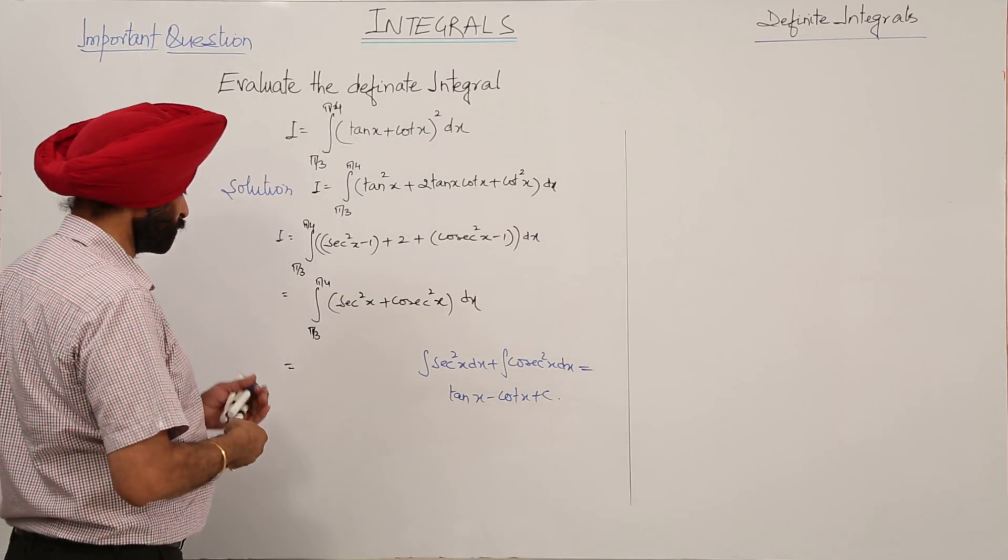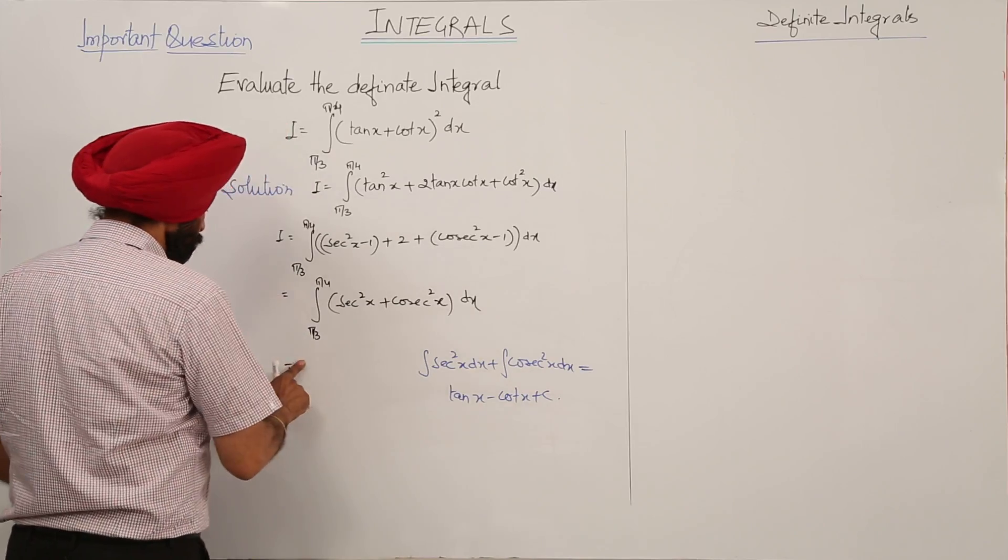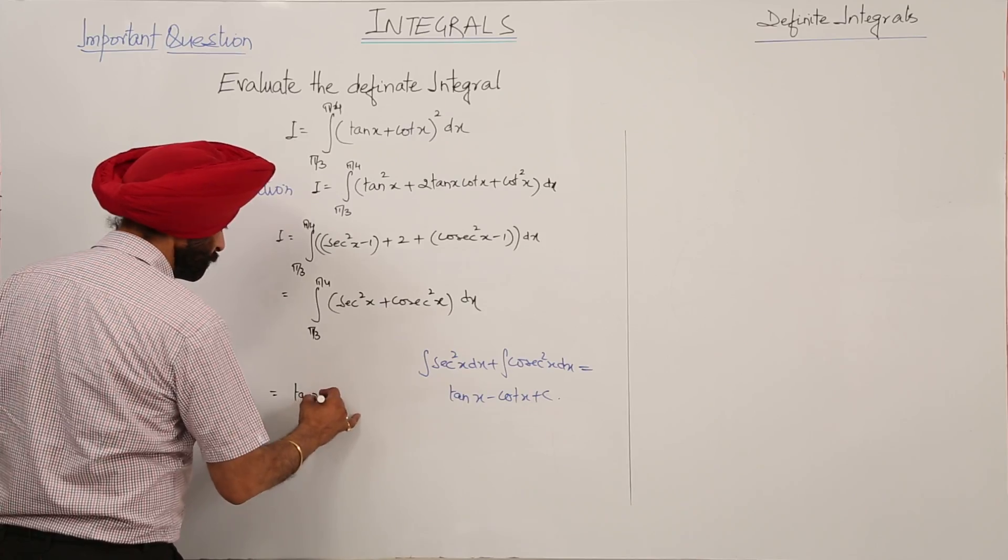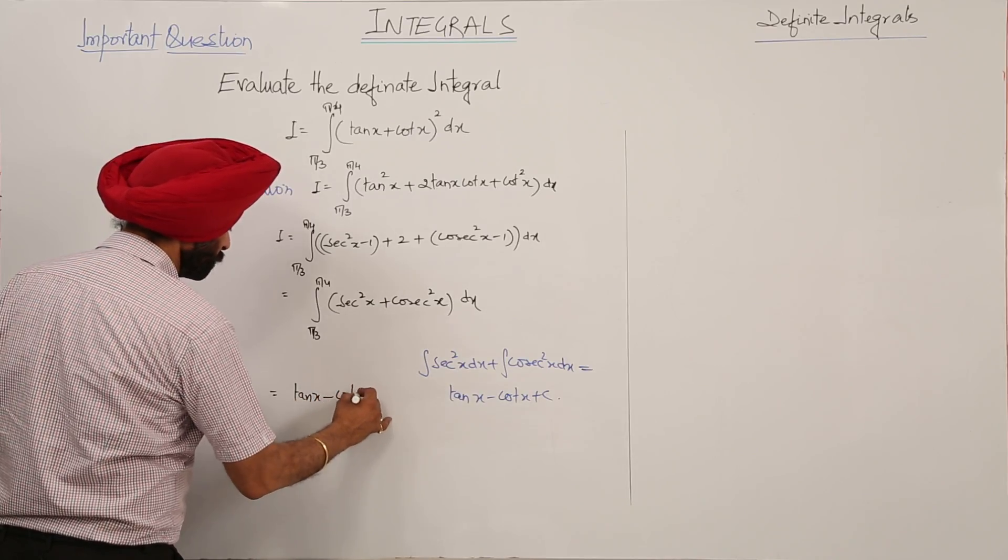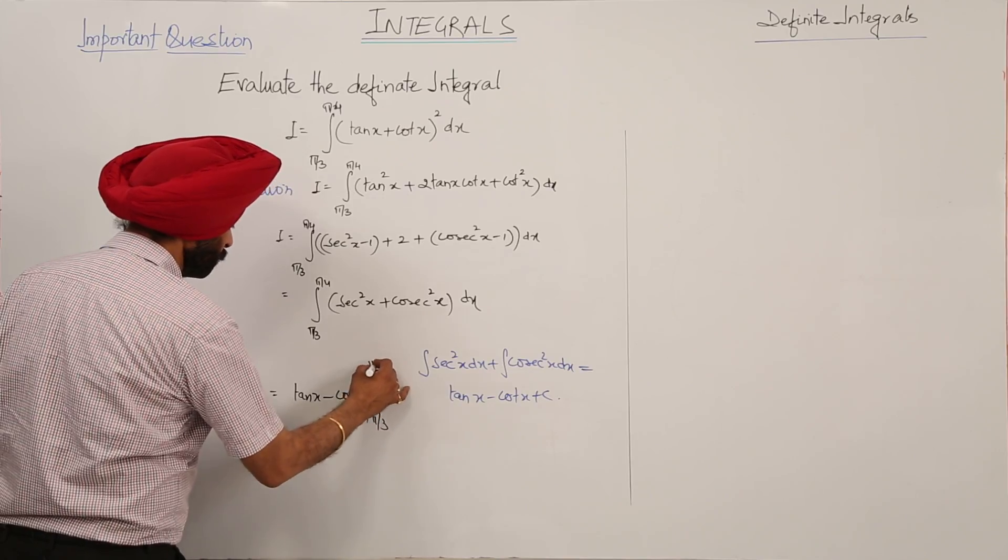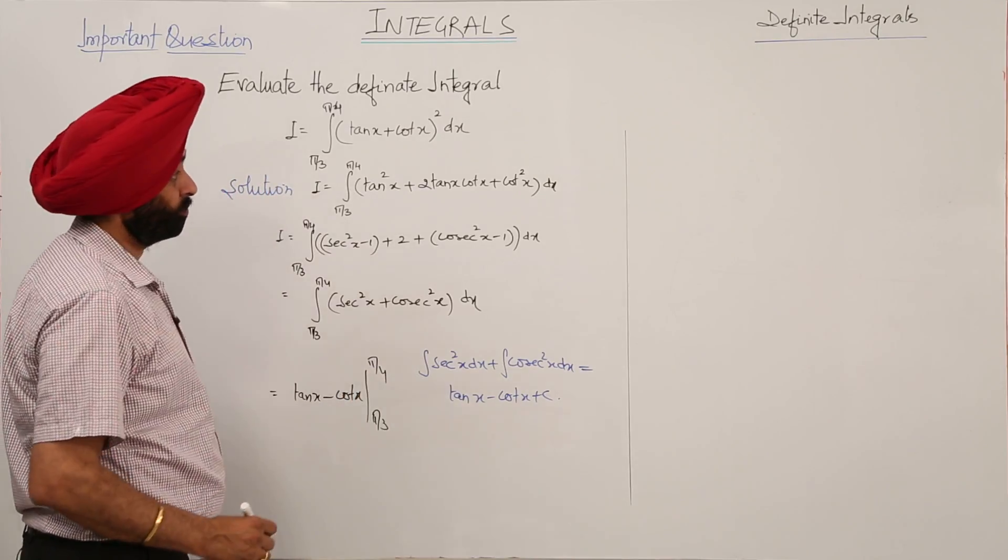Putting this in the question, this equals tan x minus cot x evaluated from pi by 3 to pi by 4.